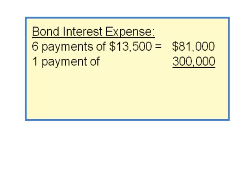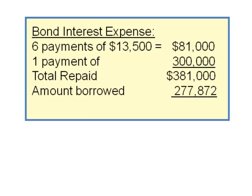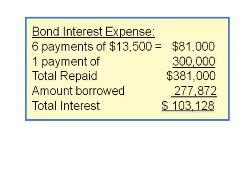The final payment is equal to the par value, $300,000. So in total over the 3 years, the total to be repaid is $381,000. When the market rate is 12%, Ritter is able to borrow $277,872. Total interest over the bond's 3-year term is $103,128.